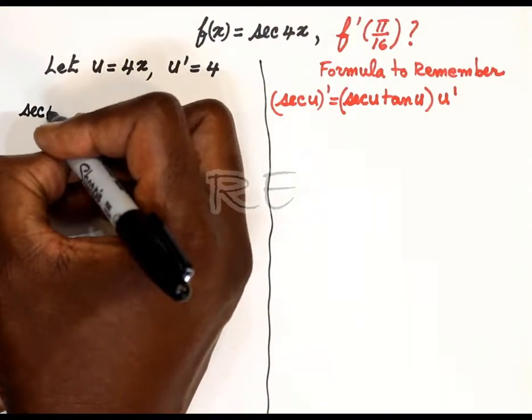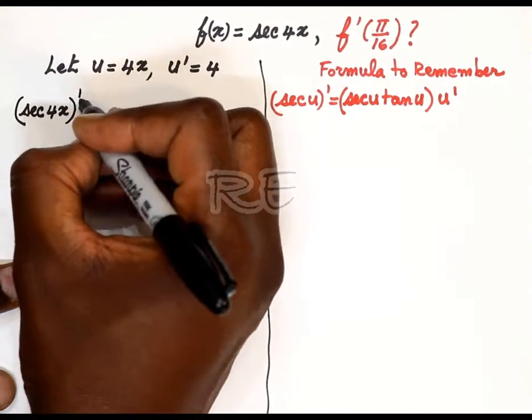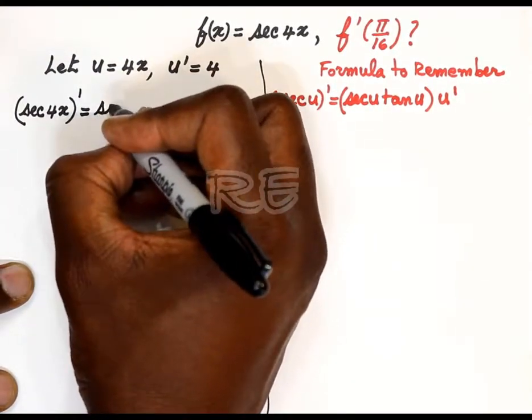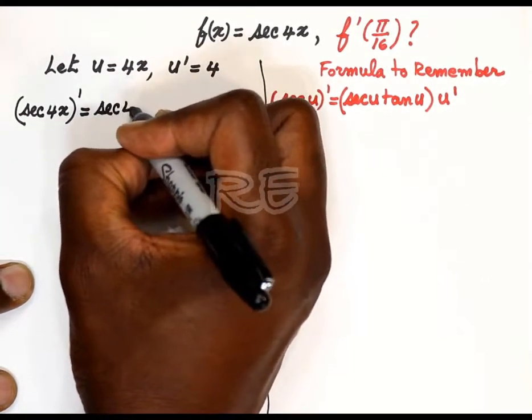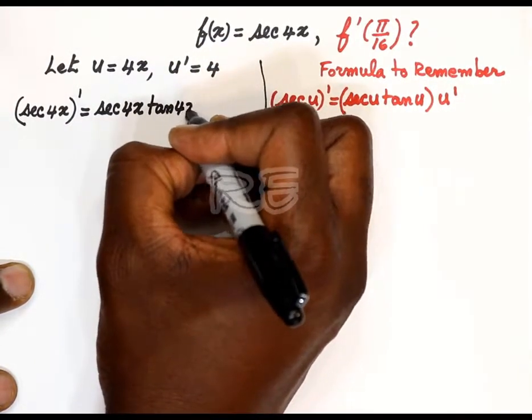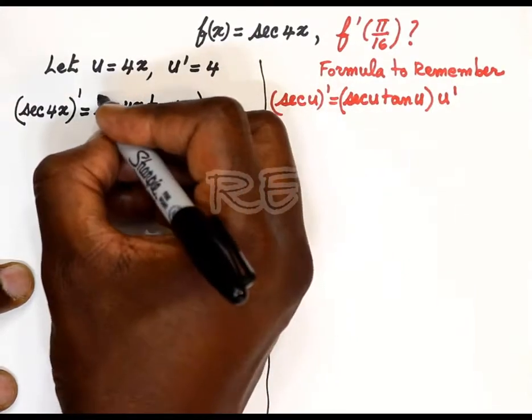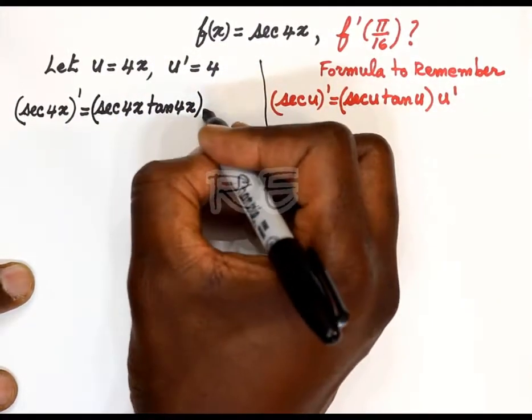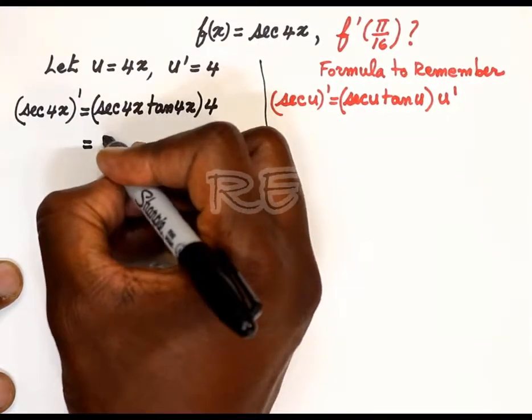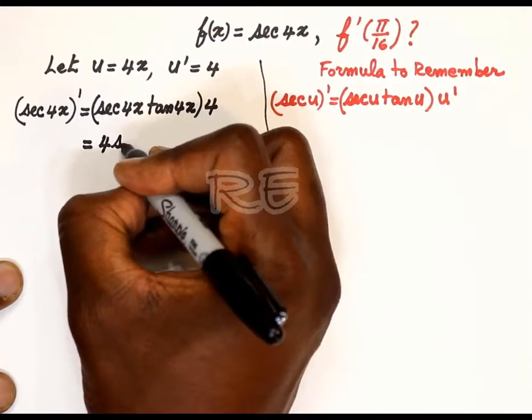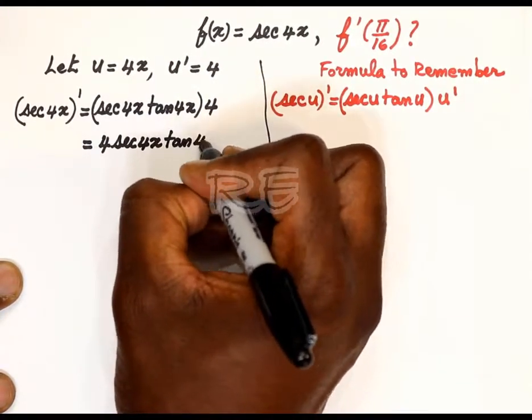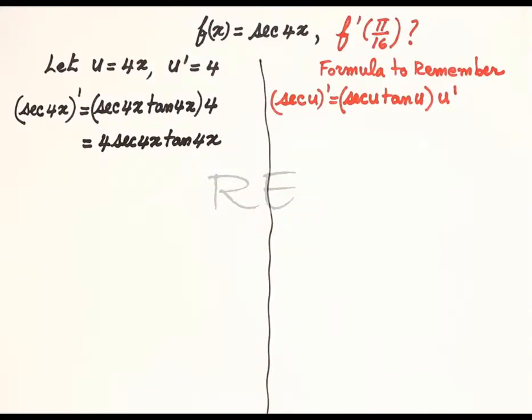The derivative of secant 4x will be secant 4x tan 4x, the whole thing multiplied by u prime, which is 4. So it's going to be 4 secant 4x tan 4x, which is really f prime of x, the derivative of f of x.